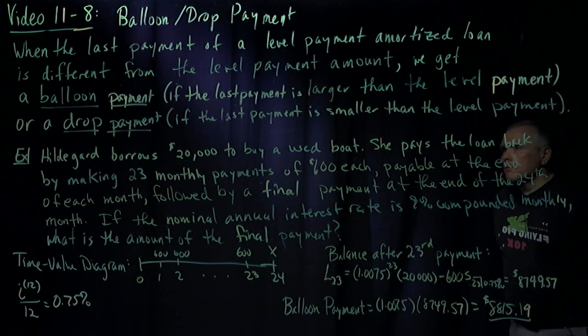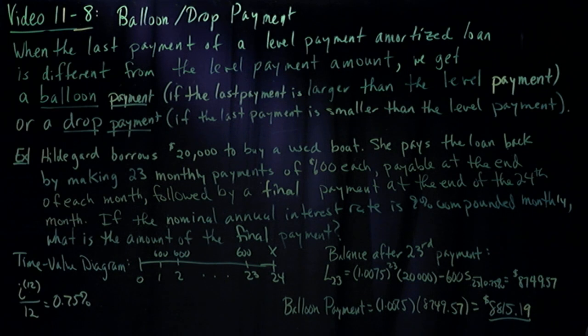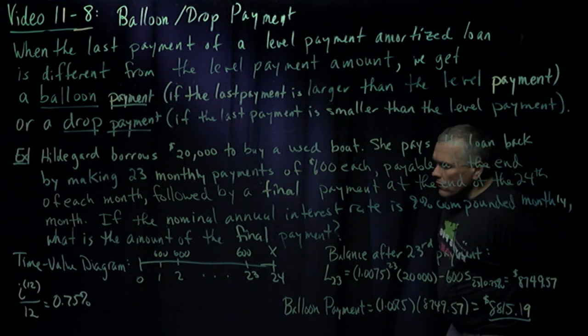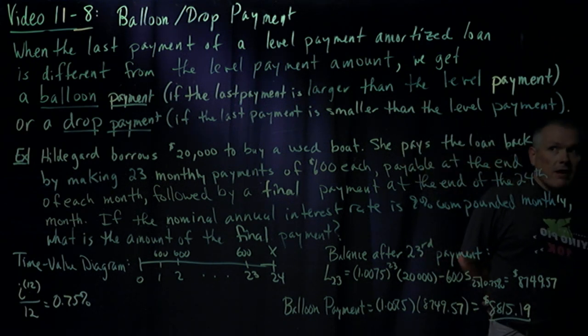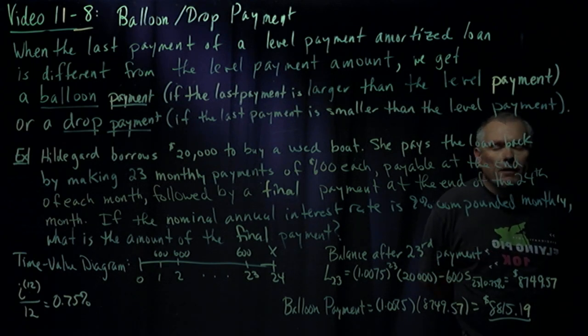In this video, we're going to discuss a little bit about what we mean by a balloon payment or a drop payment. These type of payments pop up in amortized loans when you get a final payment that's different from the level payment that you make for every other period.